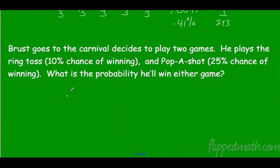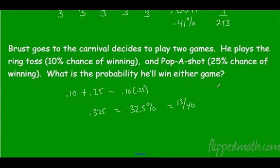So that's the probability that he wins the first or the probability he wins the second minus the probability that he wins both, the overlap. Alright, and if we get that out we get 0.325, which is 32.5 percent or 13 out of 40. Not great, but not awful.